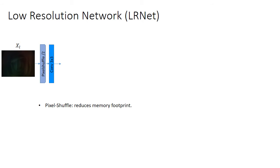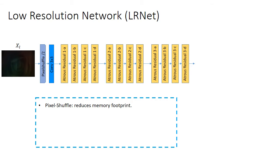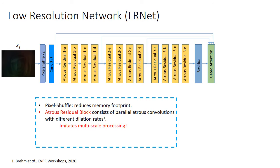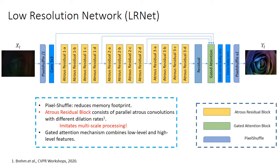The Low Resolution Network or LRNet operates on the downsampled input XL and uses pixel shuffle to increase receptive field while also being memory efficient. The building block of LRNet is our atrous residual block, which consists of parallel atrous convolutions with different dilation rates, imitating multiscale processing. We further use a gated attention mechanism which combines low level and high level features. Finally, we have another pixel shuffle layer to get the final low resolution output YL.